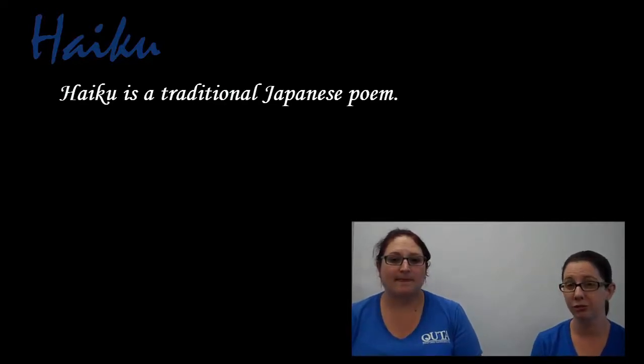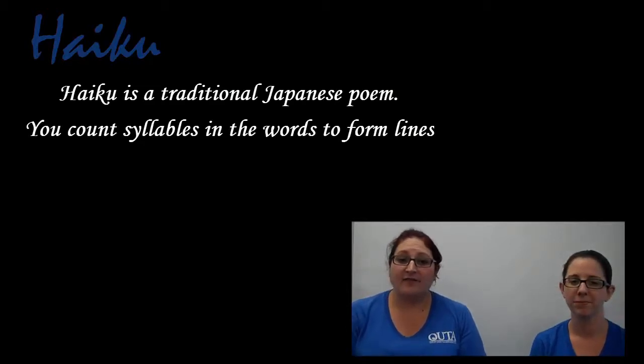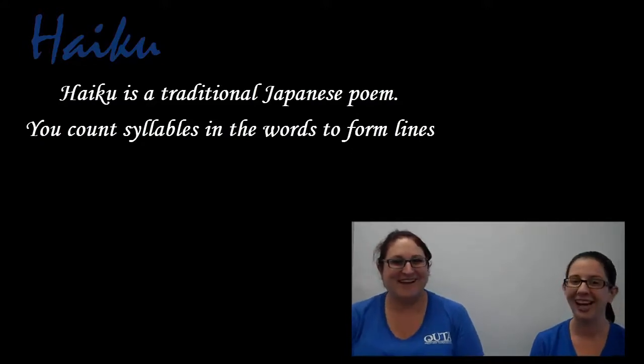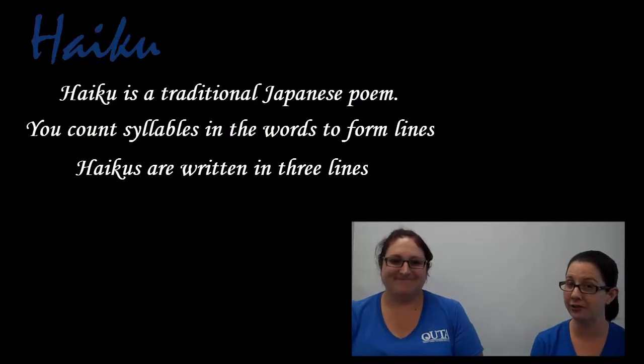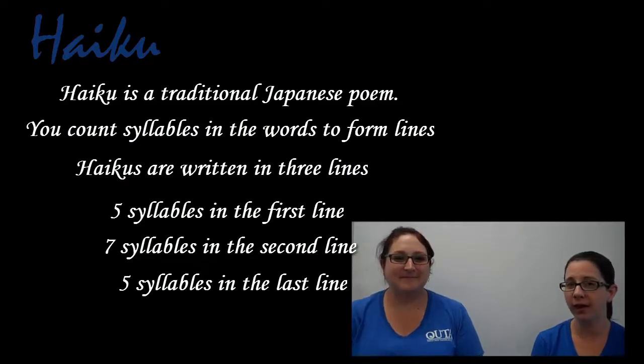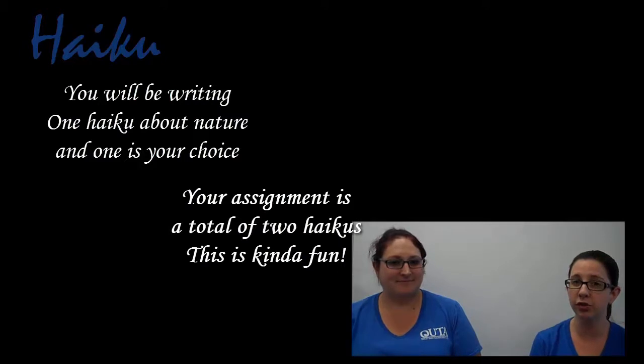Haiku is a traditional Japanese poem, and you do need to count syllables. Should I stop? Yes, please stop talking in haiku. But you are right. Haiku is a traditional Japanese poem and you do need to count syllables. There is a pattern: five, seven, then five more — a total of three lines. You're killing me, but you're right. Haikus are written in three lines with five syllables in the first, seven in the second, and five again in the third. Also, haikus are usually about nature. You will be writing one haiku about nature and one of your choice. Your assignment is a total of two haikus.